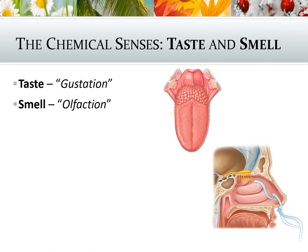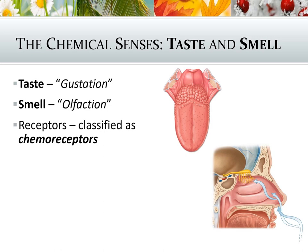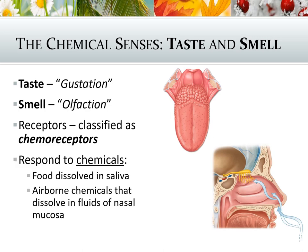Let's talk about our chemical senses first — taste and smell. The technical terms are gustation and olfaction. The receptor types are classified as chemoreceptors, meaning they respond to chemicals: food dissolved in our saliva, or airborne chemicals dissolved in the fluids of our nasal mucosa. These sensory receptors pick up those dissolved chemicals.